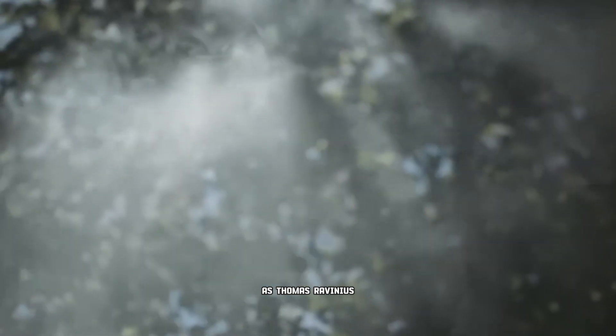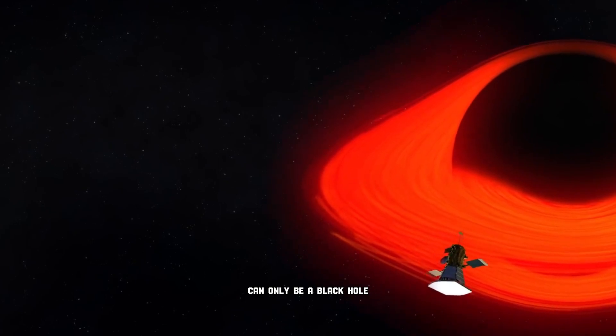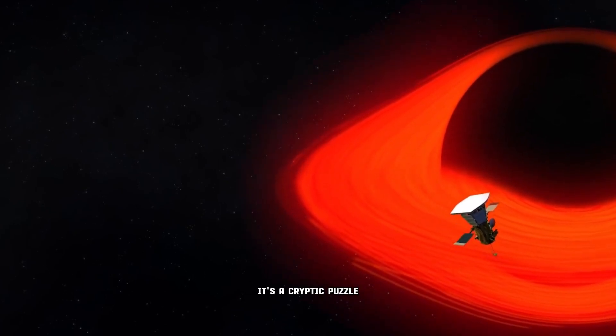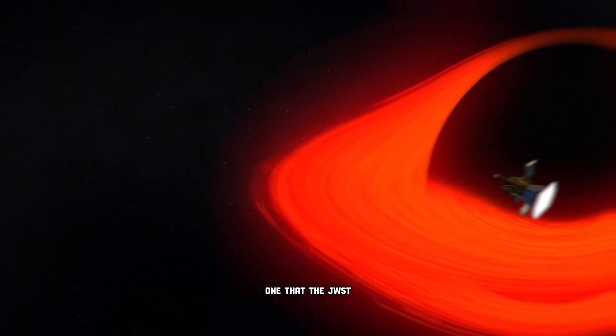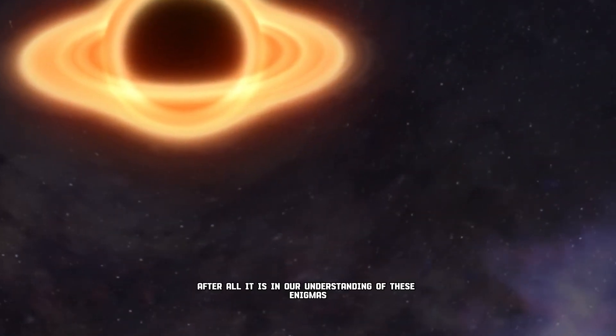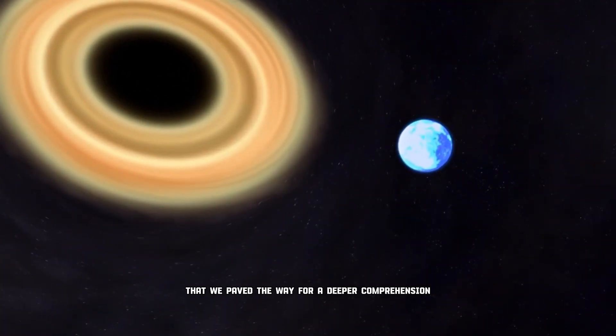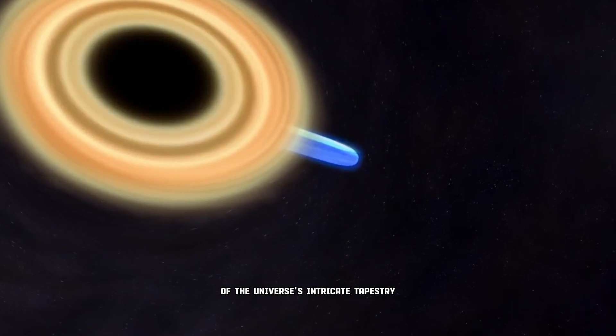As Thomas Ravinius, a scientist from the European Southern Observatory, aptly noted, 'An invisible object with a mass at least four times that of the sun can only be a black hole.' It's a cryptic puzzle, one that the JWST endeavors to decode with unwavering determination. After all, it is in our understanding of these enigmas that we pave the way for a deeper comprehension of the universe's intricate tapestry.